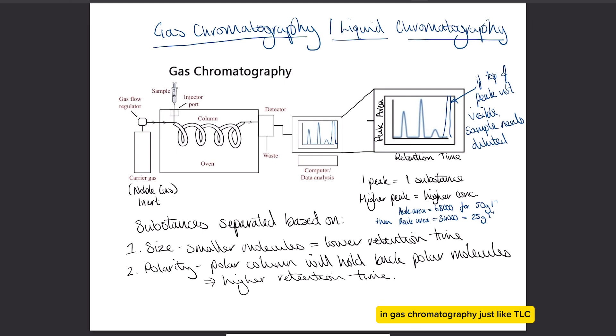In gas chromatography, just like TLC, substances are separated based on their size. Again, the smaller molecules will travel through faster, so in this case they would have what we call a lower retention time. We don't have RF values in this type of chromatography, we have retention time. Retention time is essentially just how long it took the substance to get out of the column. If the smaller molecules are traveling faster, they'll take less time to get through the column and reach the detector.